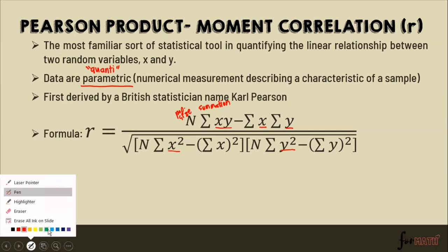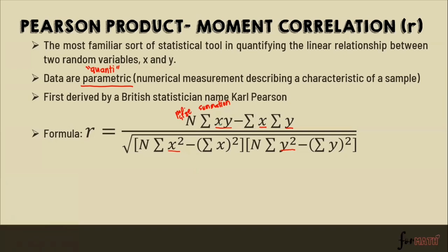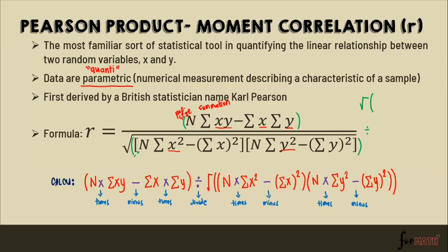For one-liner calculators, the pattern for computing R is: open parentheses for the numerator, separate numerator and denominator, put divide, then square root with two opening parentheses after the square root sign (to ensure the square root covers both terms in the denominator). You need two parentheses at the start after the square root sign so that the entire denominator expression is properly captured.